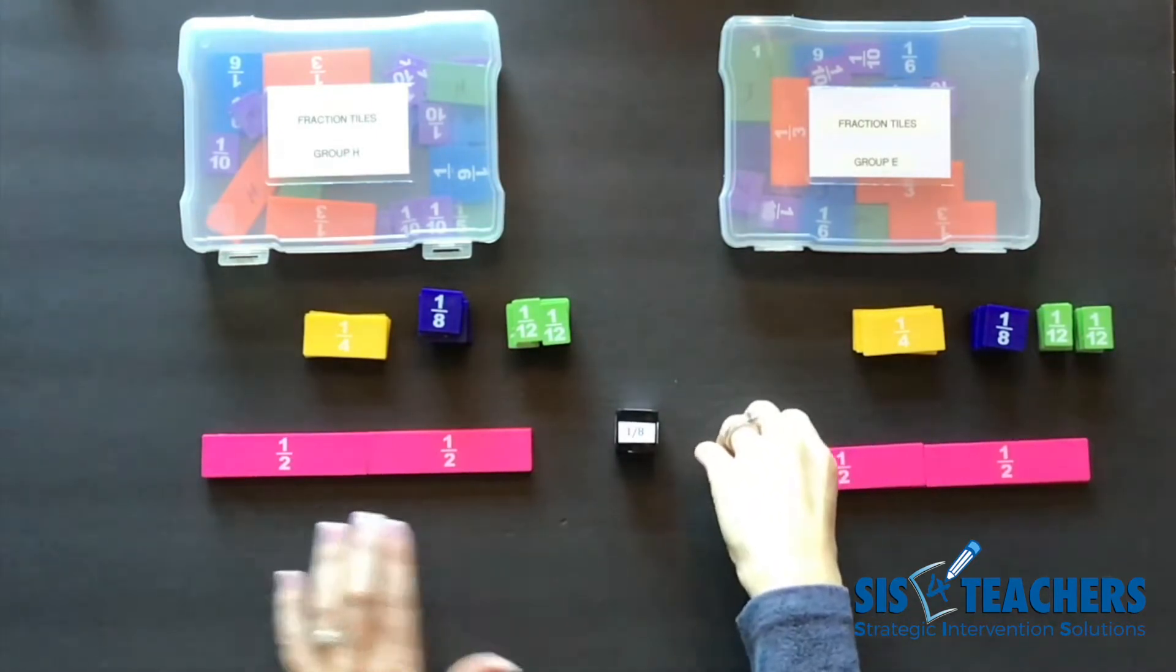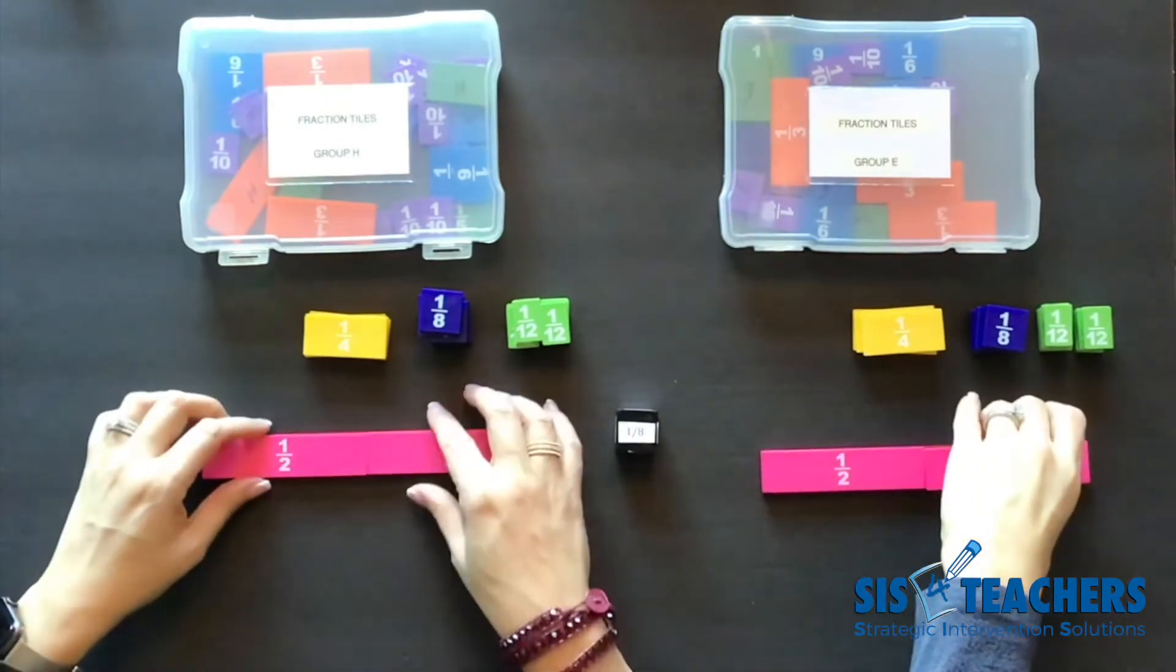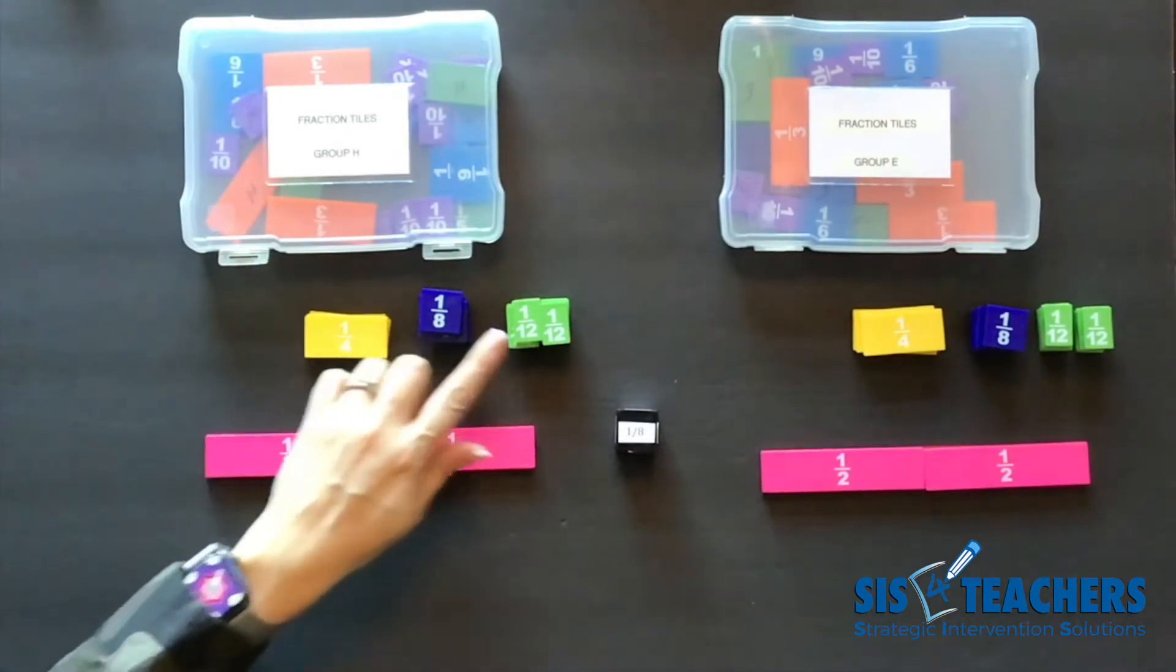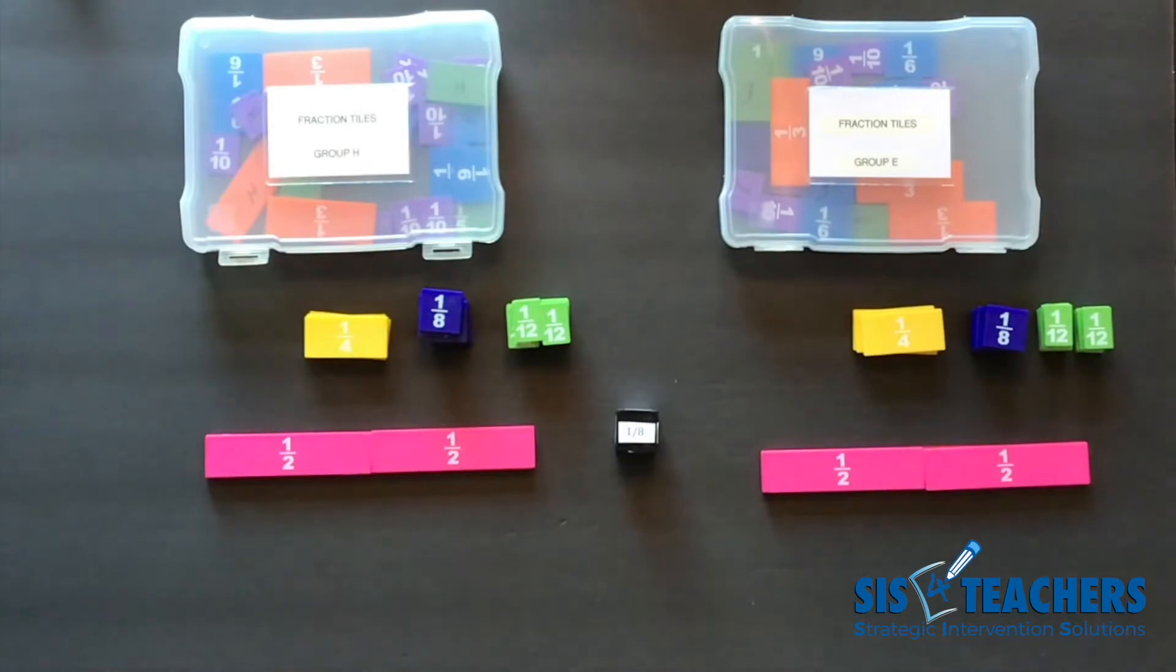The object of this game is to uncover to get back to the whole first. We have certain fractions that we're using in this game: 1/4, 1/8, 1/12, and obviously our half. Our die corresponds to that.